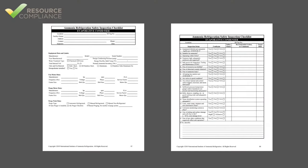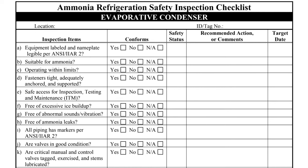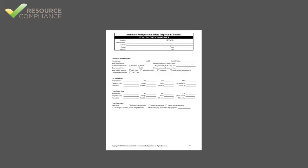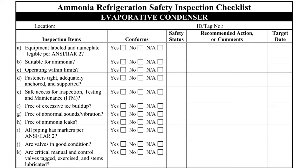The checklists are typically two pages. The first page contains contact and equipment information and the second page has the inspection checklist. While all the information on the second page will change year to year with the equipment inspection, much of the information on the first page should stay the same. For this reason, you may only have to fill out the first page for each piece of equipment once. For subsequent years, you should only have to fill out the second page.